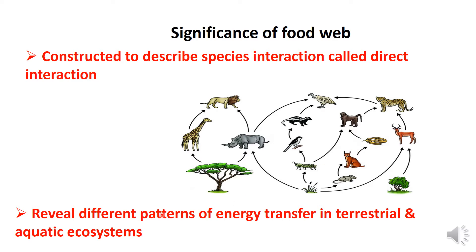The food web reveals different patterns of energy transfer in terrestrial and aquatic ecosystems. The energy amount and transfer pathways can be found using the food web.